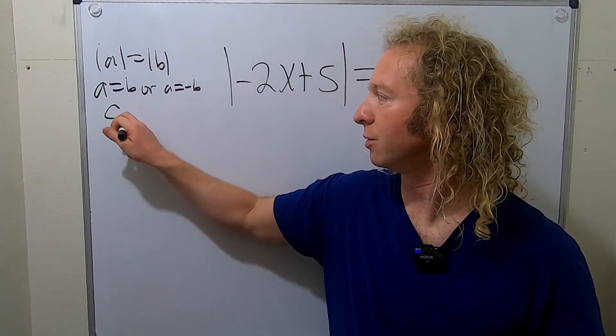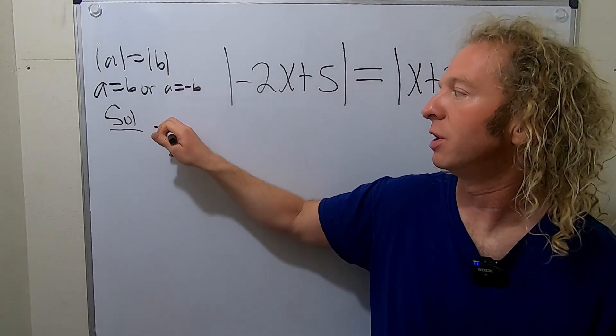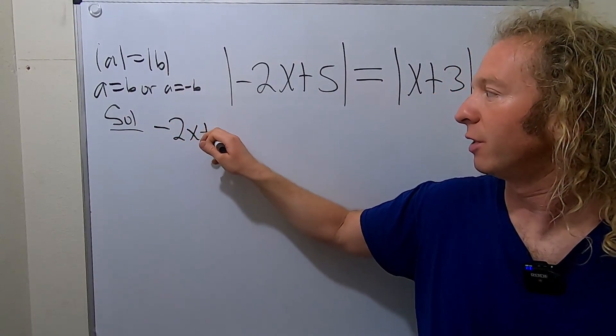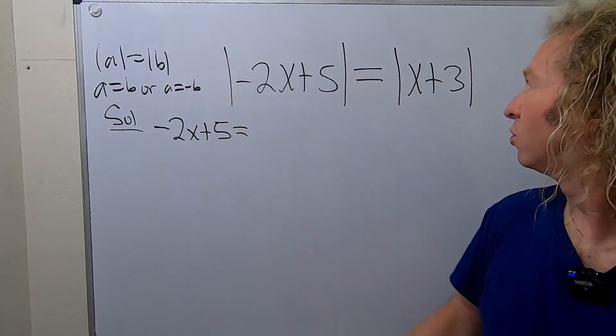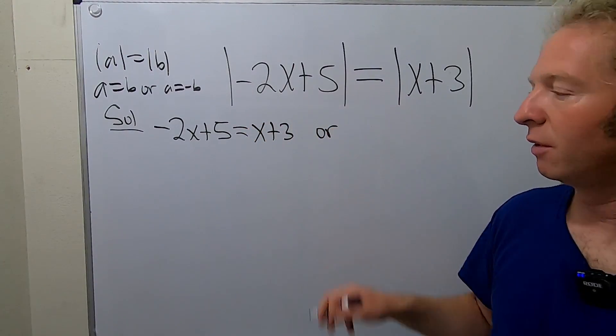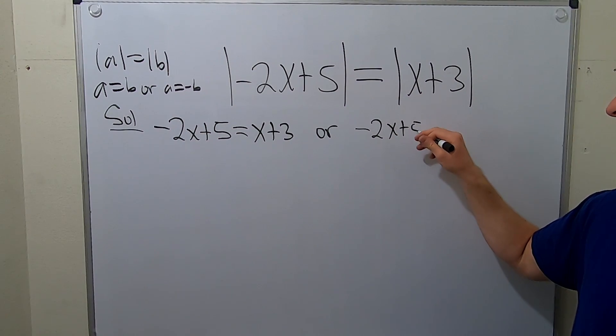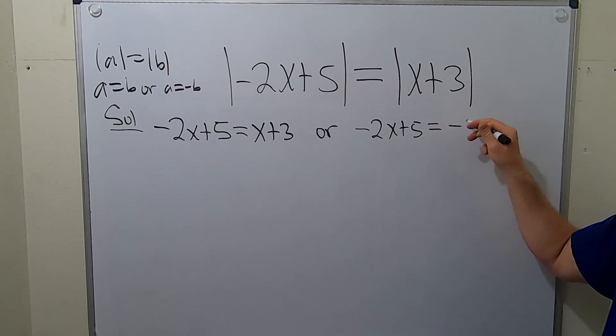So let's work through it. Solution. We'll start by dropping the absolute values. So negative 2x plus 5 equals x plus 3. Or we have the other case, negative 2x plus 5 equals minus x plus 3.